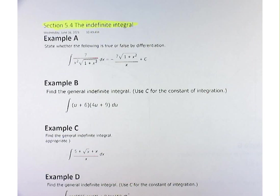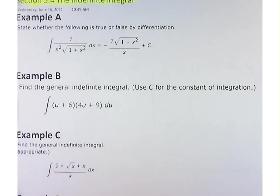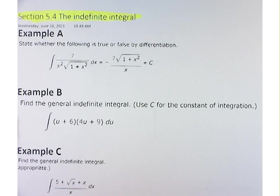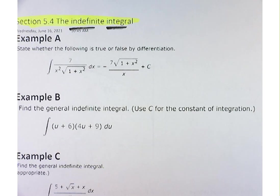So the difference between section 5.4 and 5.3 is there's no limits on our integrals. That makes this an indefinite integral as opposed to the last section where we were working with definite integrals.